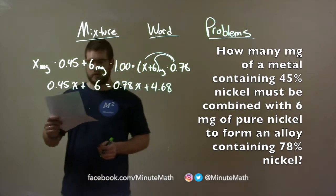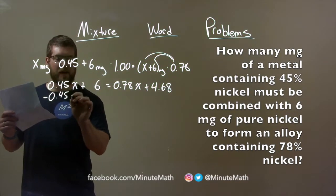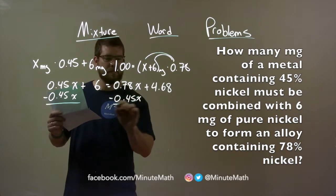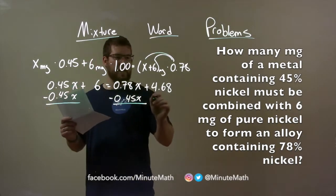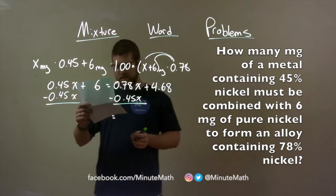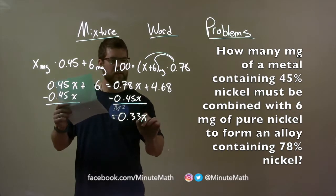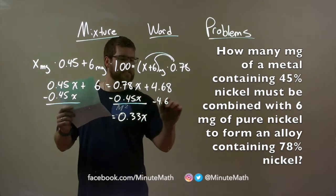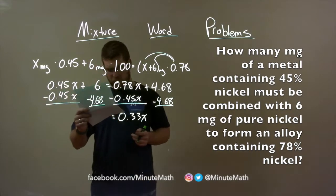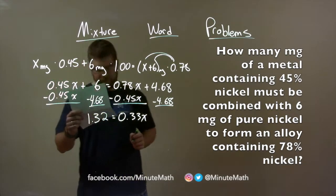We're on our journey to solve for X. I'm going to subtract the 0.45X to both sides. Let's get our like terms together. 0.78 minus 0.45 is 0.33X. I'm going to subtract 4.68 to both sides, and 6 minus 4.68 is 1.32.